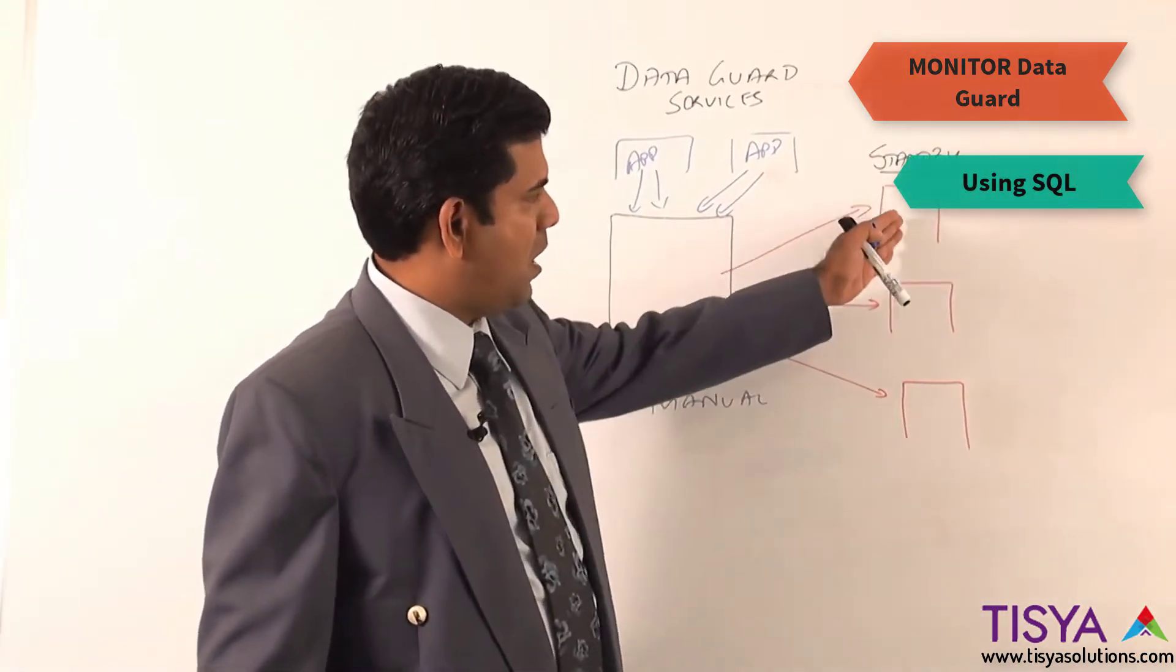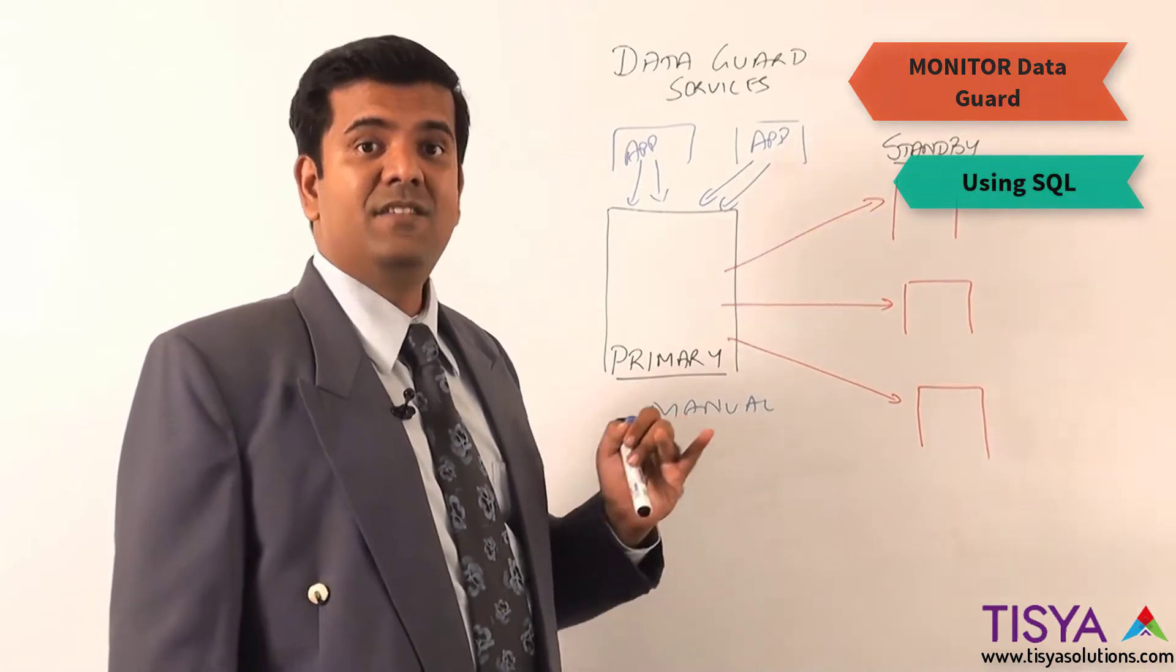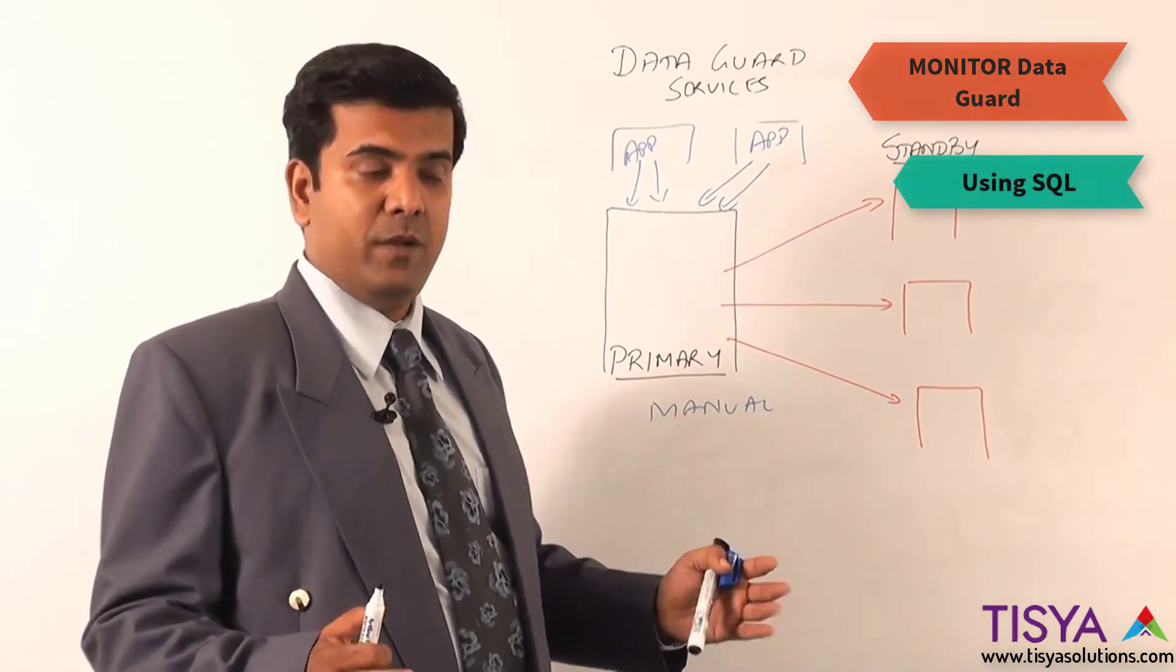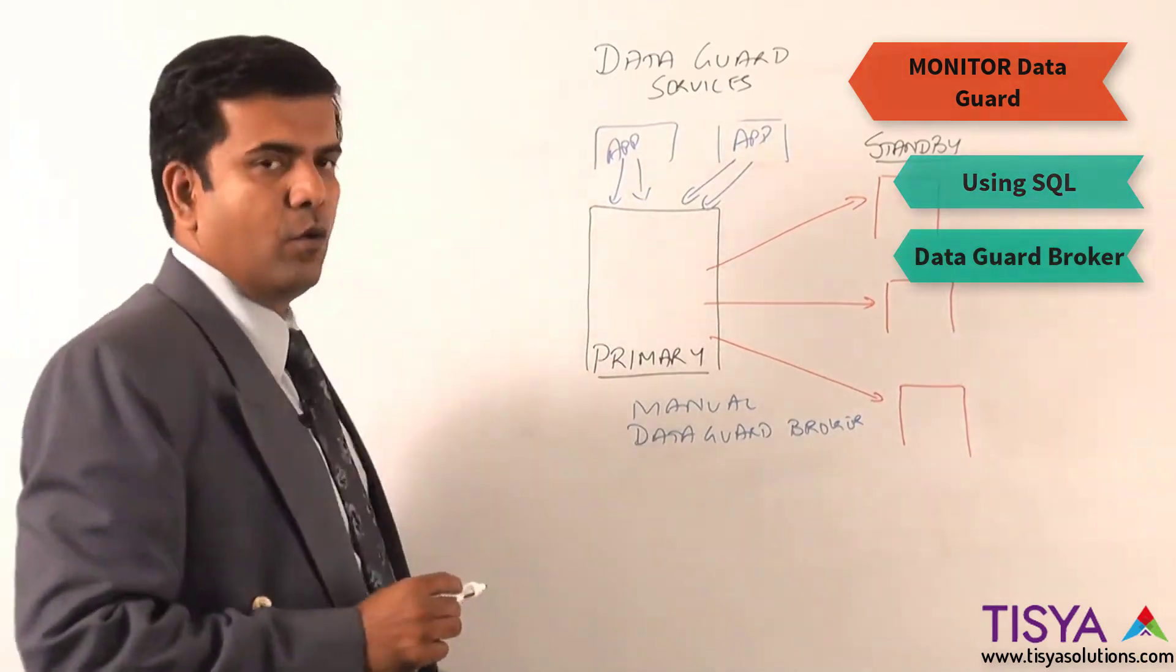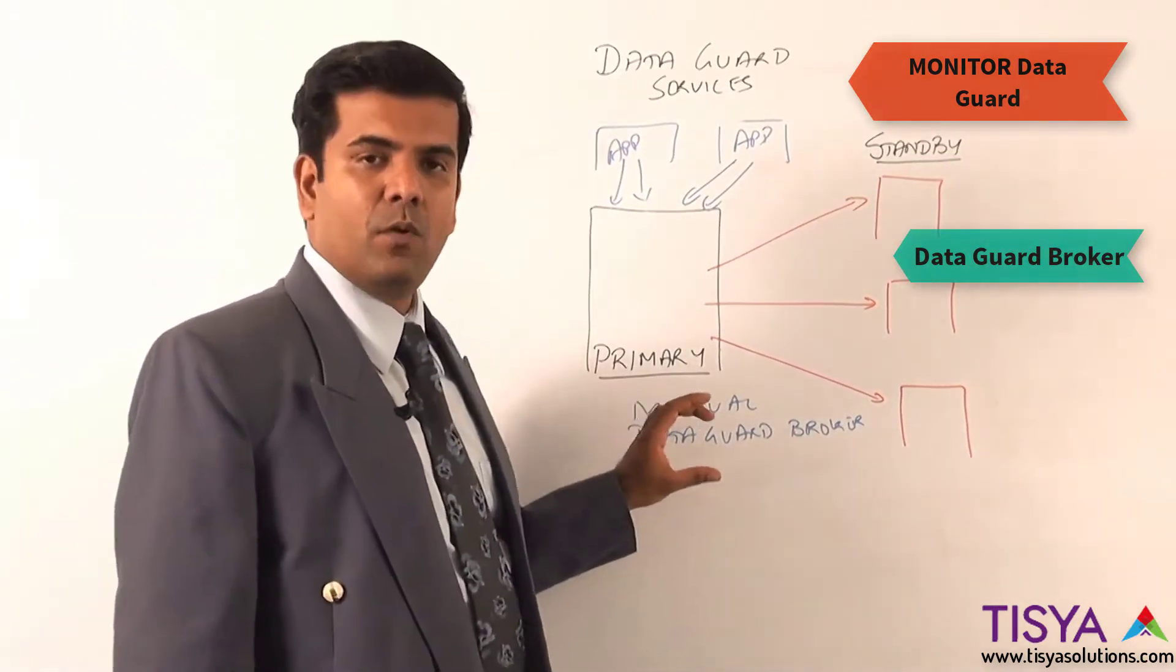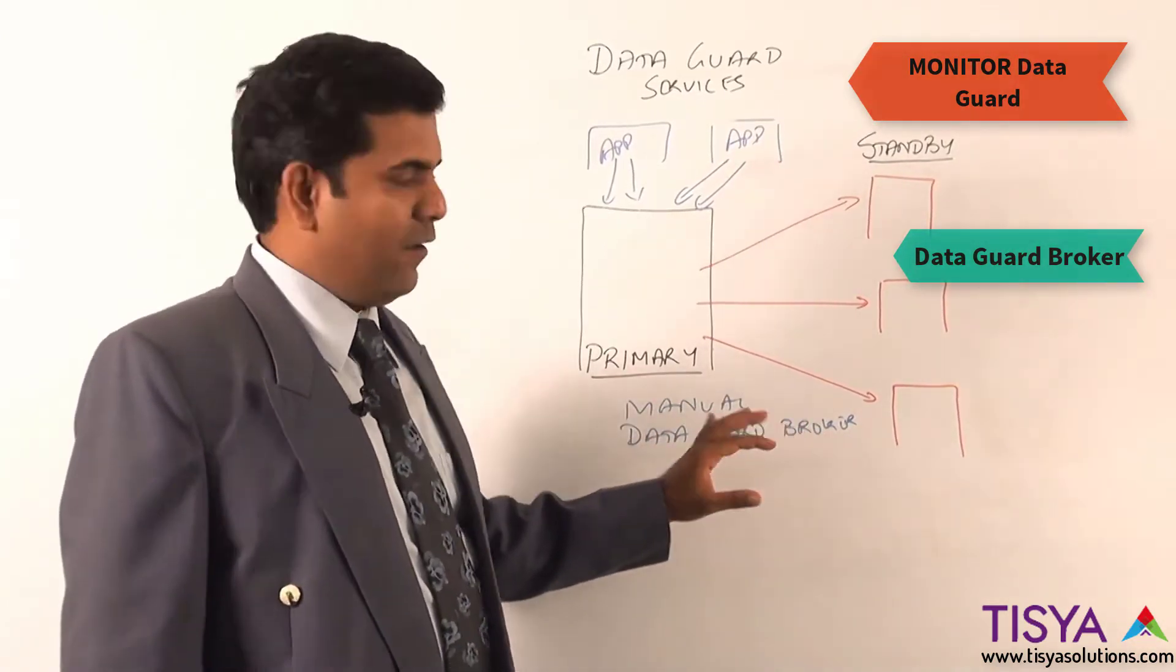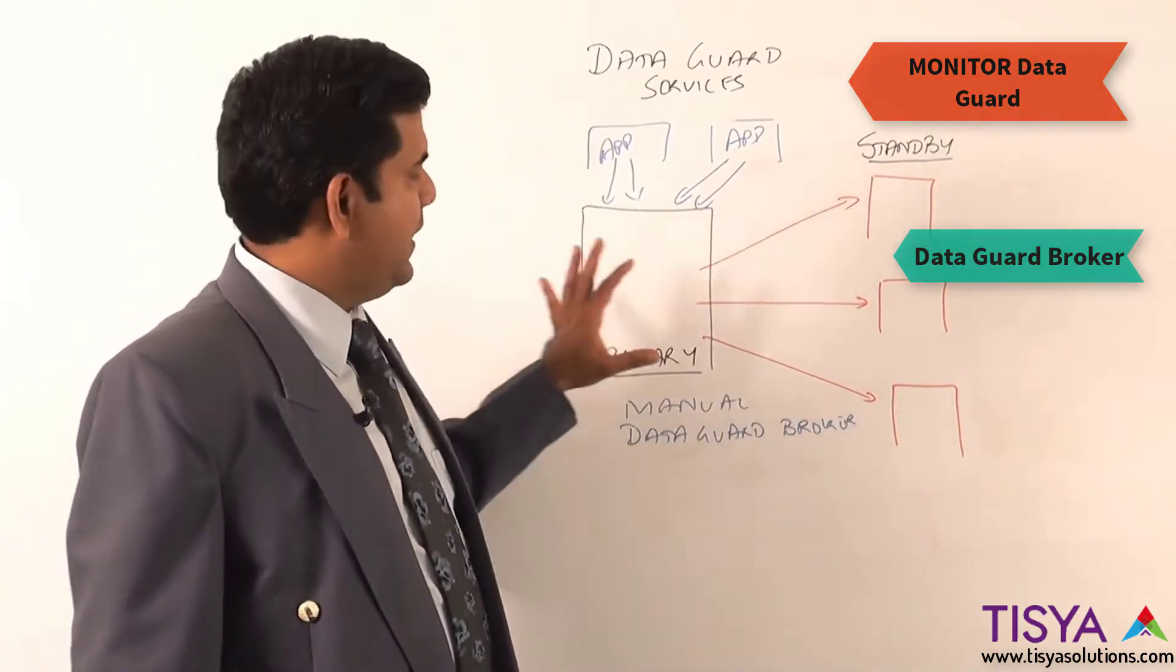The easier and more controlled way of doing it is using Data Guard Broker. Data Guard Broker is an additional piece of program that we need to use to ensure this runs. Architecturally, inside the databases there is a new process called DMON, the Data Guard Monitor process, that is started on all the servers.